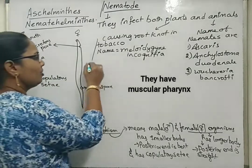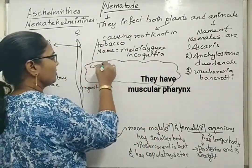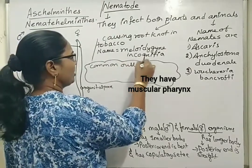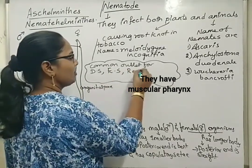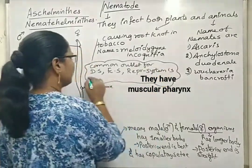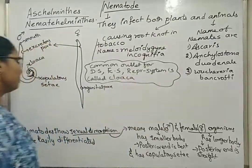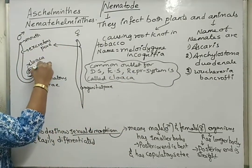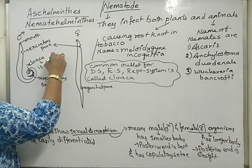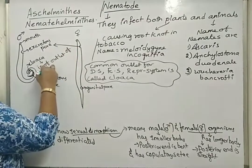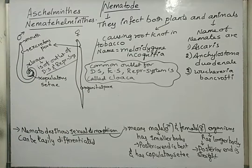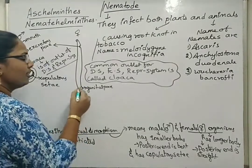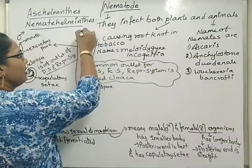The cloaca is a common outlet for the digestive system, excretory system, and reproductive system. However, in Ascaris, the cloaca involves only the digestive system and reproductive system — only two systems are involved. In the female, there is no cloaca.